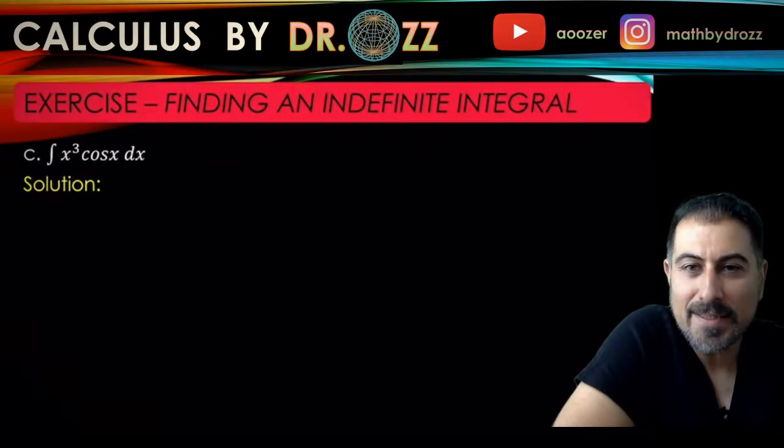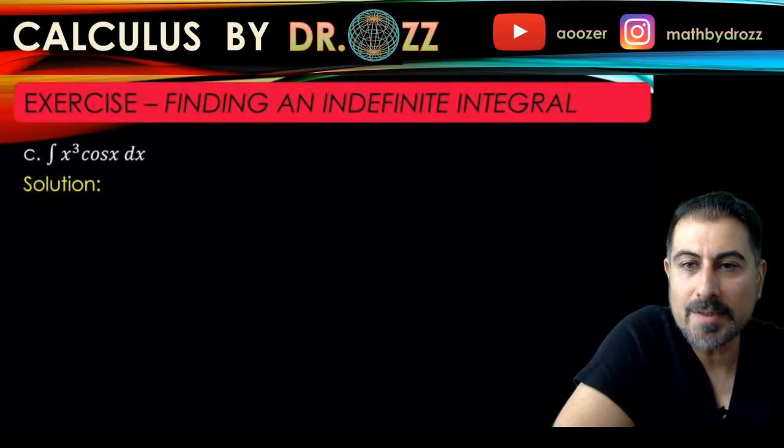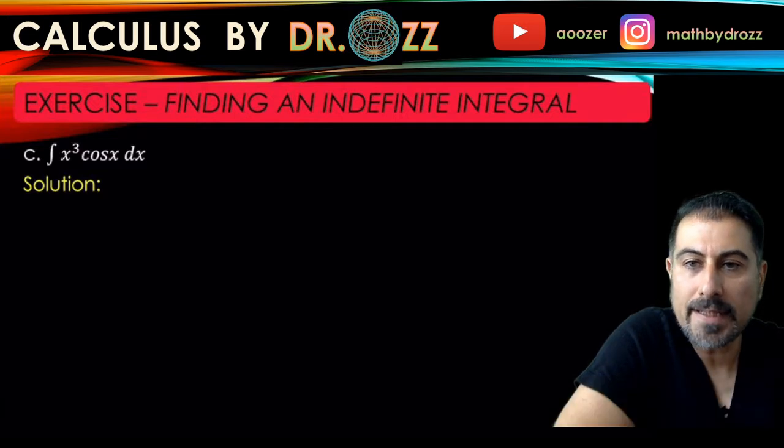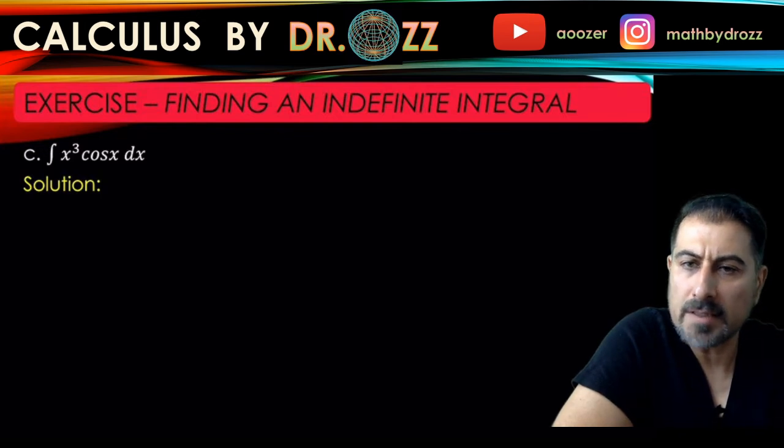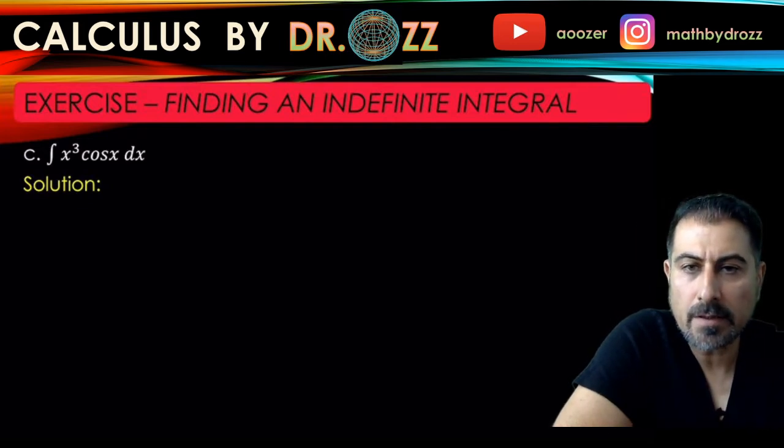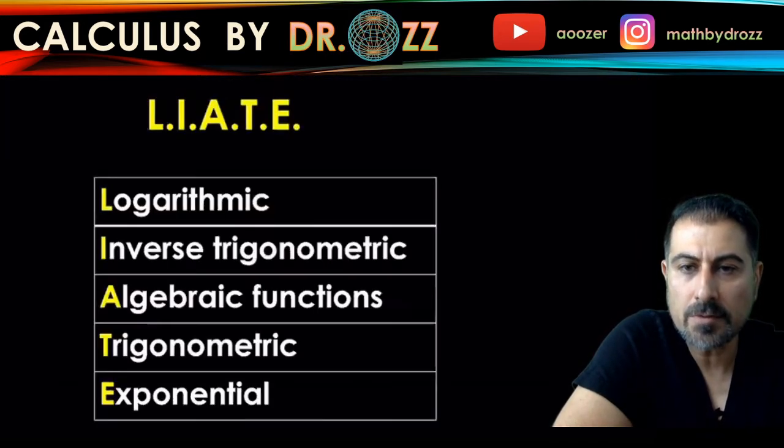Alright, let's continue with part C. I have integral x cubed cosine x dx. So what I'm going to do here is that probably known techniques would fail except integration by parts because if you go back to the acronyms that I had in the previous videos...